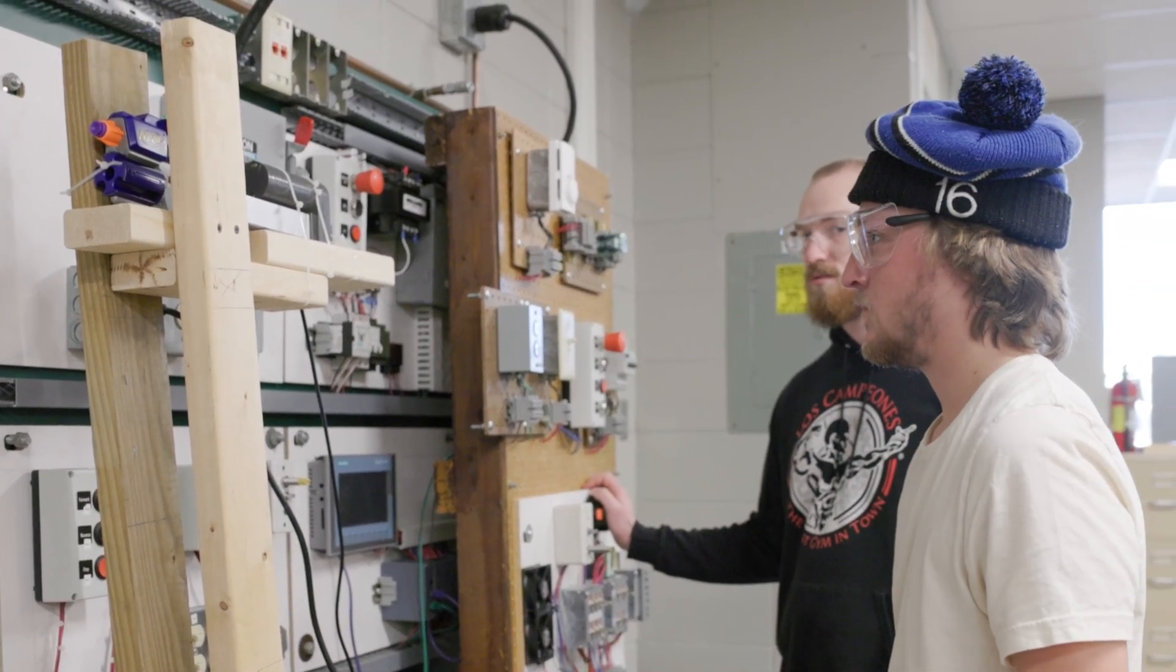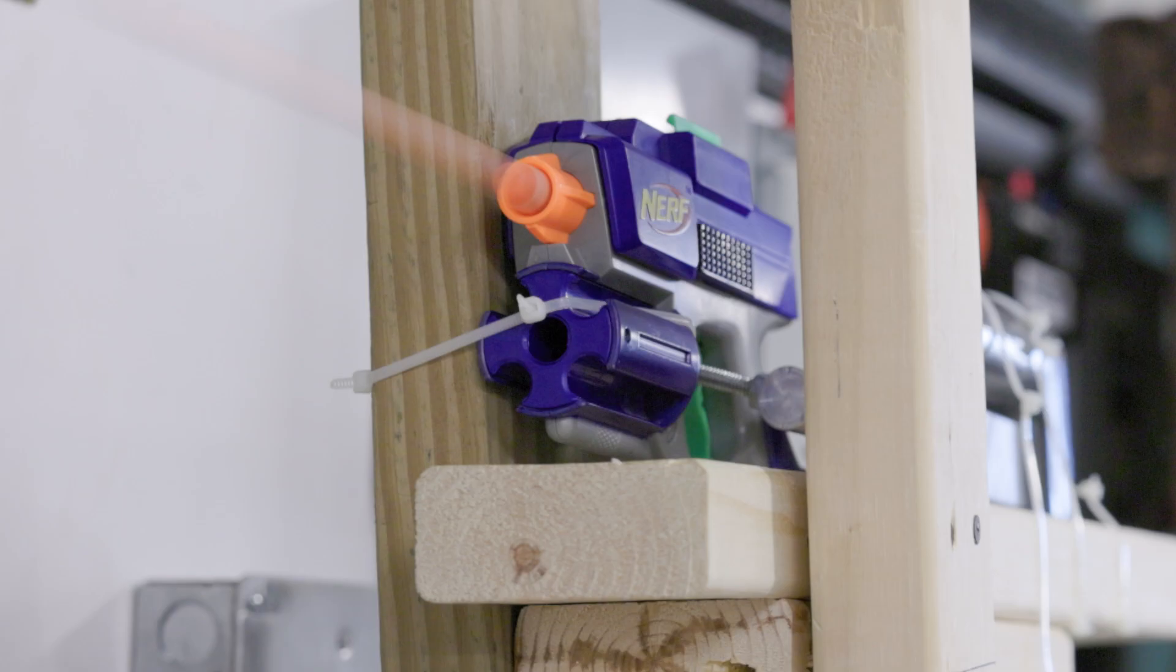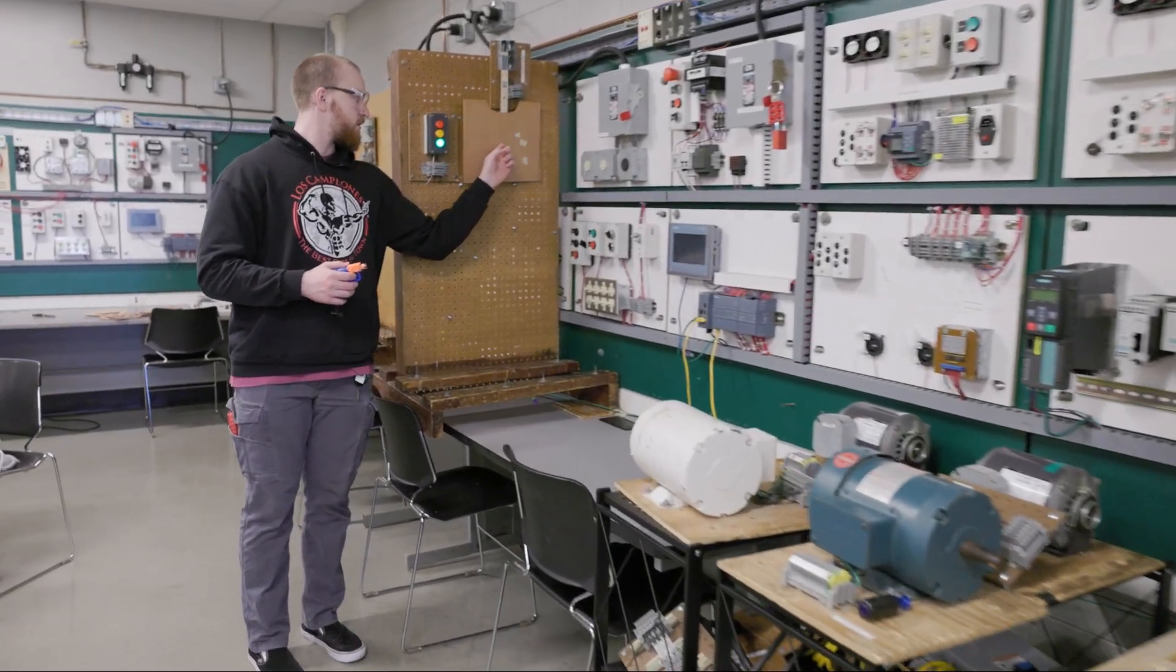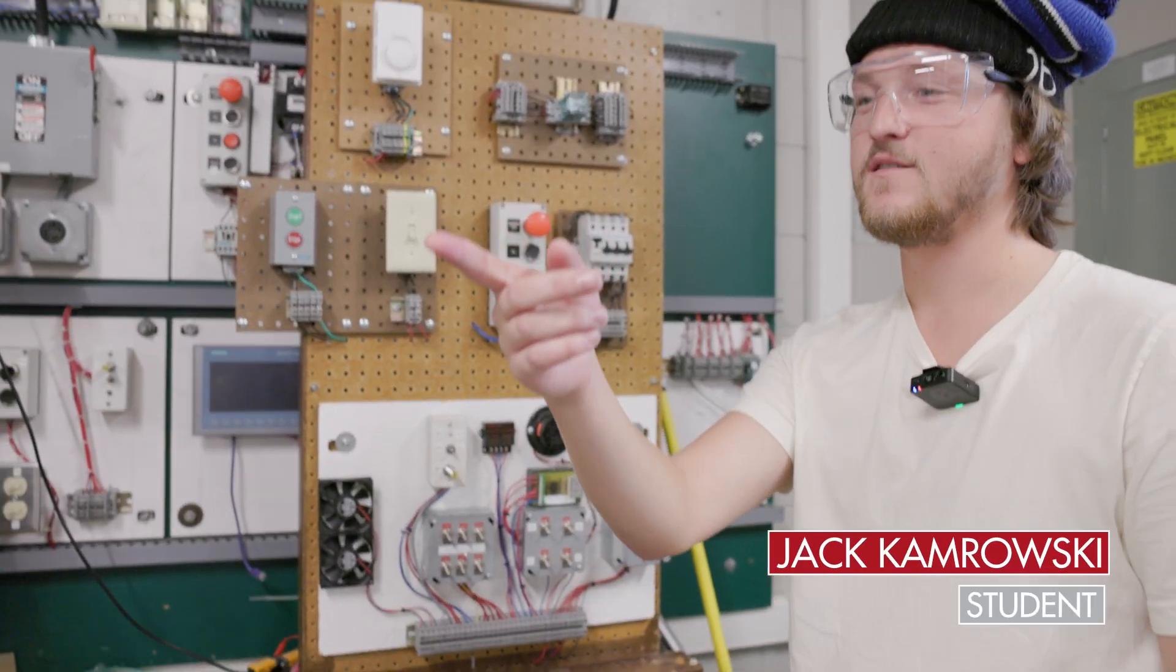This solenoid pulls back, pulling the trigger on the Nerf gun, hitting this plate, switching that to green, which will turn on a pizza oven.